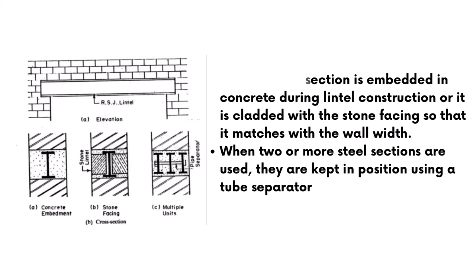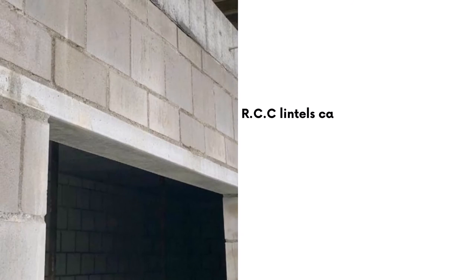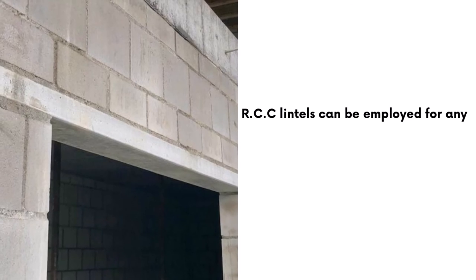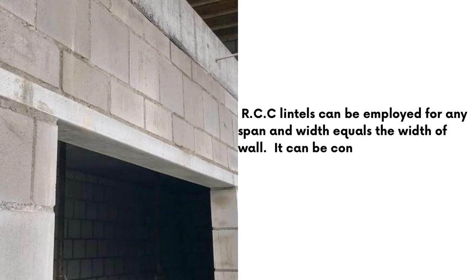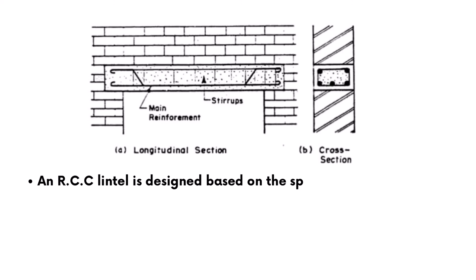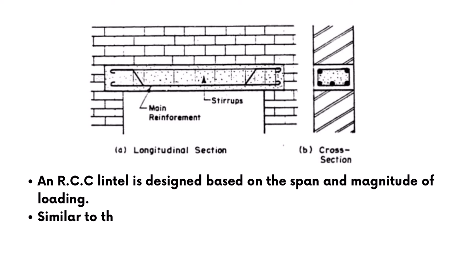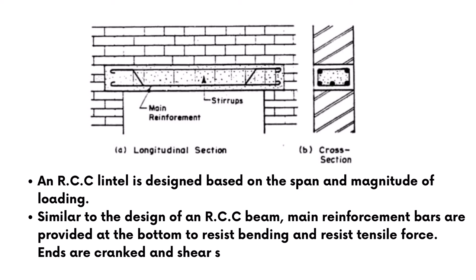Reinforced concrete lintels, or RCC lintels, due to their strength, rigidity, fire resistance, economy, and ease of construction, have placed all other lintel types in second place. RCC lintels can be employed for any span, with width equal to the width of the wall. They can be constructed either as cast-in-situ or precast. An RCC lintel is designed based on the span and magnitude of loading. Similar to the design of an RCC beam, main reinforcement bars are provided at the bottom to resist bending and tensile forces. Ends are cranked and shear stirrups are provided to resist shear.